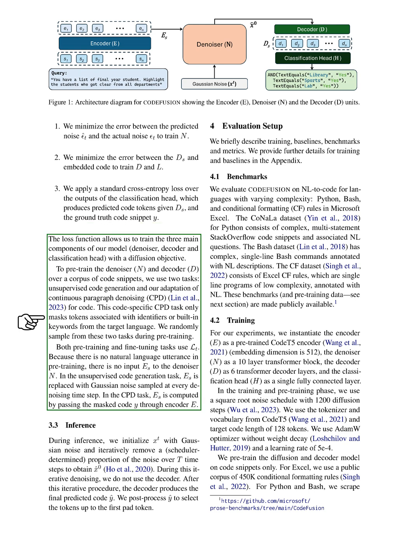To pre-train the denoiser and decoder, we use two tasks: unsupervised code generation and our adaptation of continuous paragraph denoising for code. This code-specific task only masks tokens associated with identifiers or built-in keywords from the target language. We randomly select from these two tasks during pre-training.